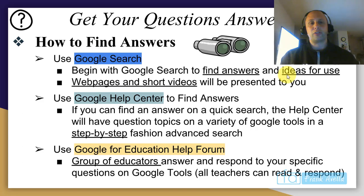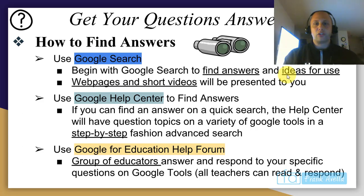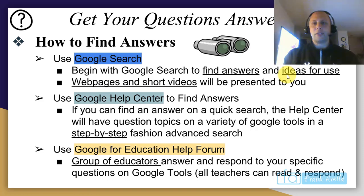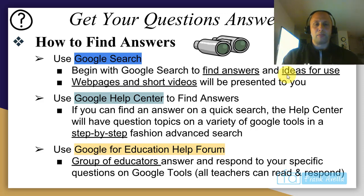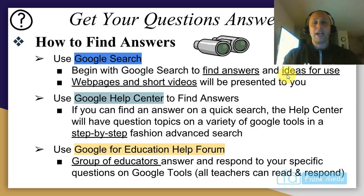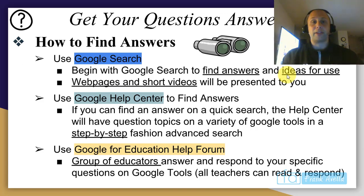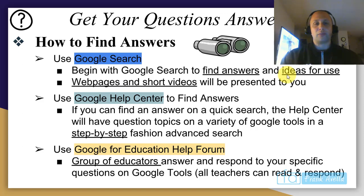How to find answers: the first way is Google Search. This is just your basic search. If you have any question on a Google tool, just go to Google Search, type in your question, and you'll get answers. Most of the time web pages will pop up, and also some short videos. Sometimes a video is much better than just reading.